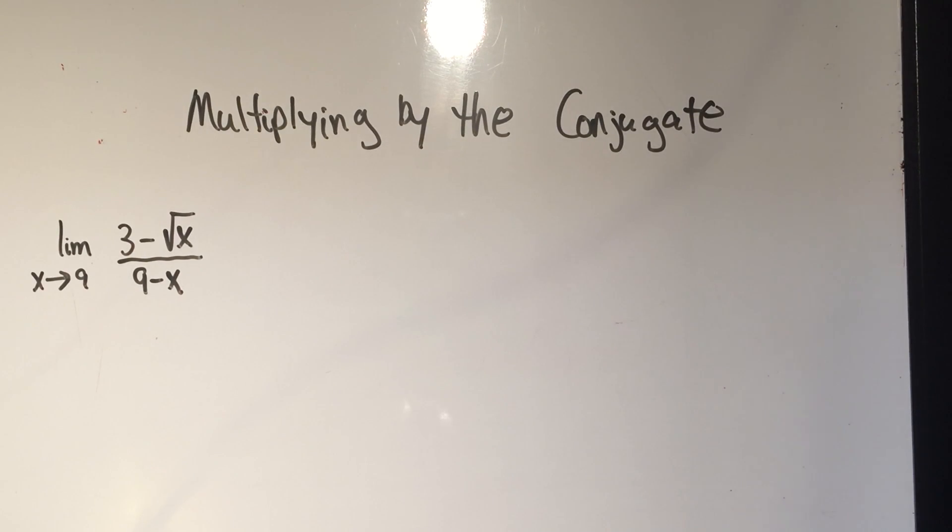So when do you know when you have to multiply by the conjugate? Whenever you see limits with square roots, that's the tip. If you see a square root, you have to multiply by the conjugate.